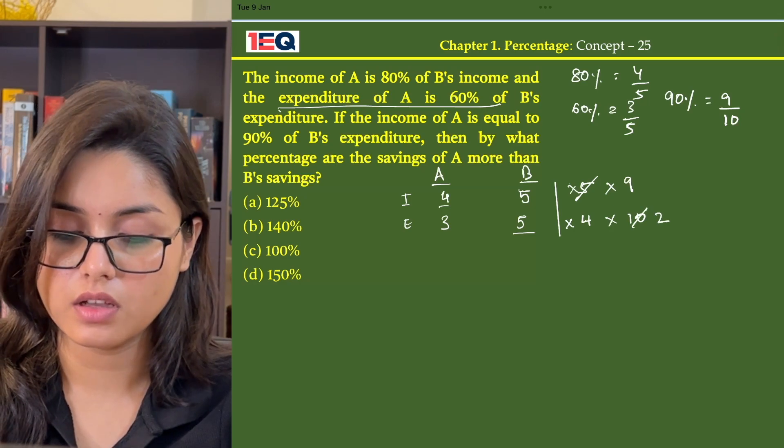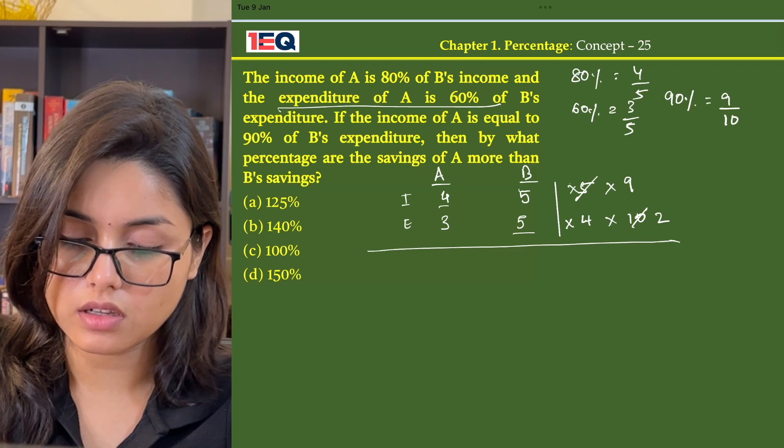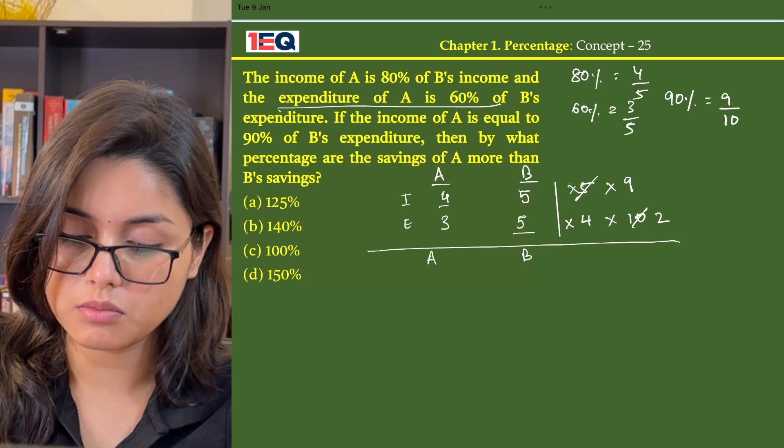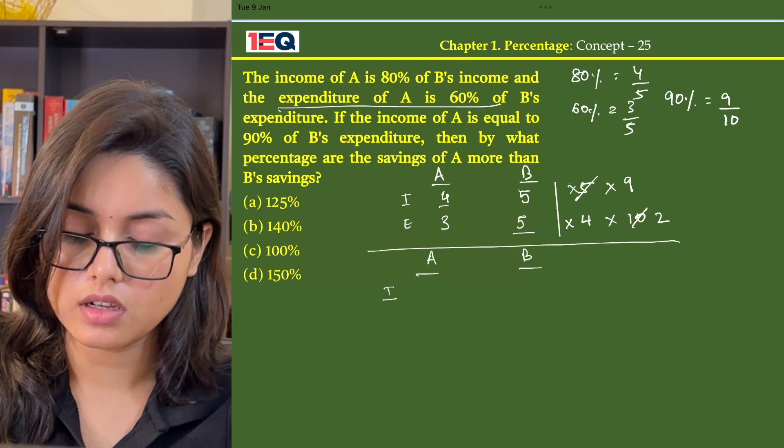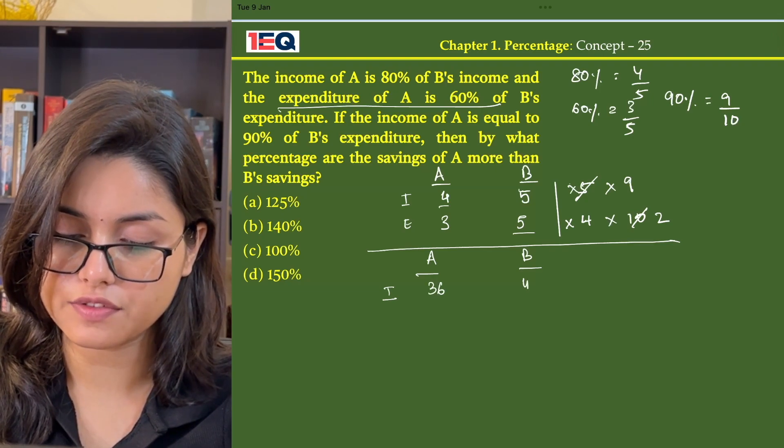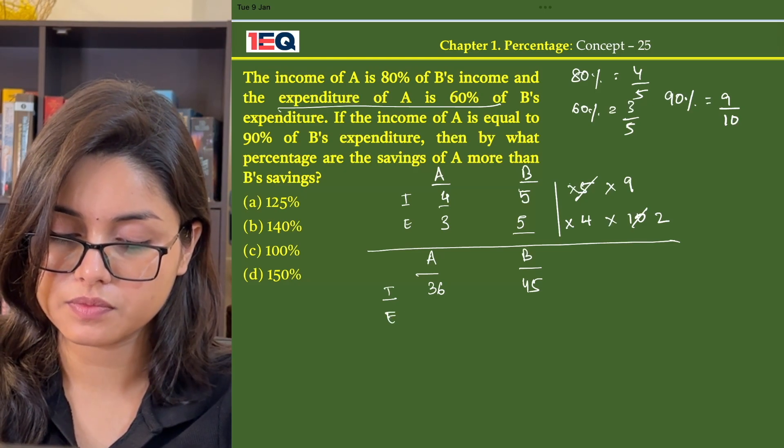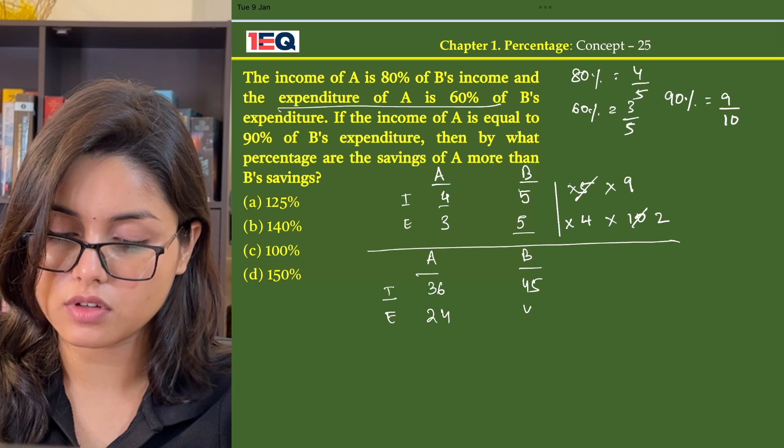From 5 to 10, we will multiply the amounts. Income of A and B becomes 4 nines are 36, 5 nines are 45, and their respective expenditures are 24 and 40.